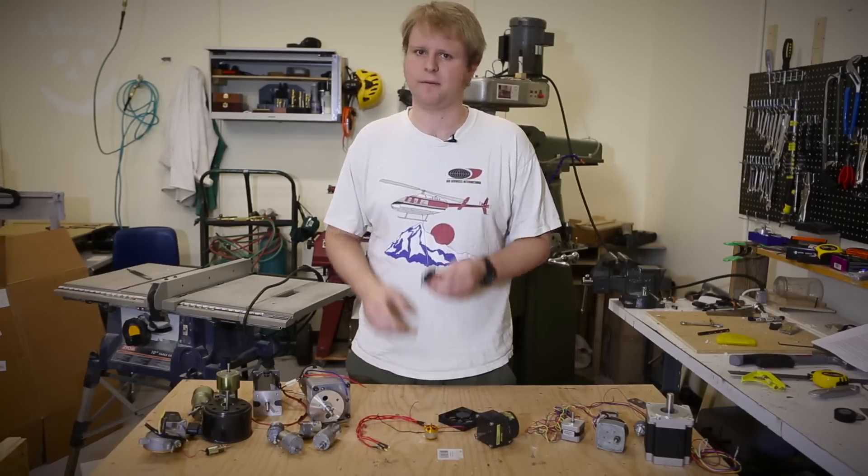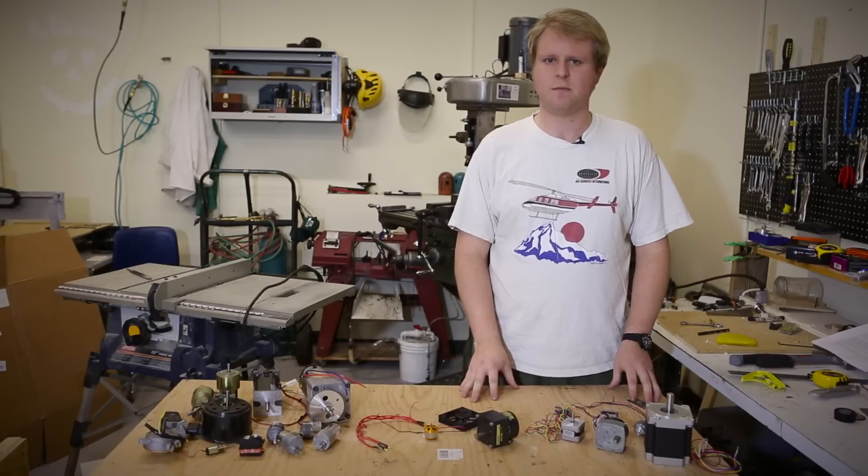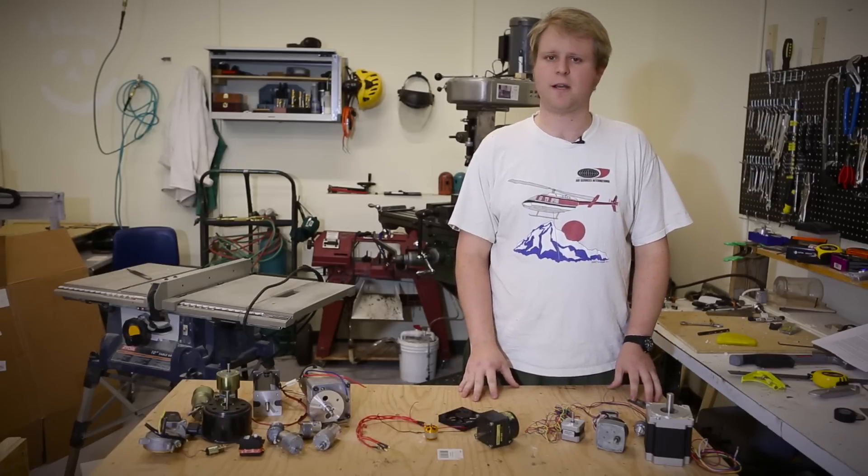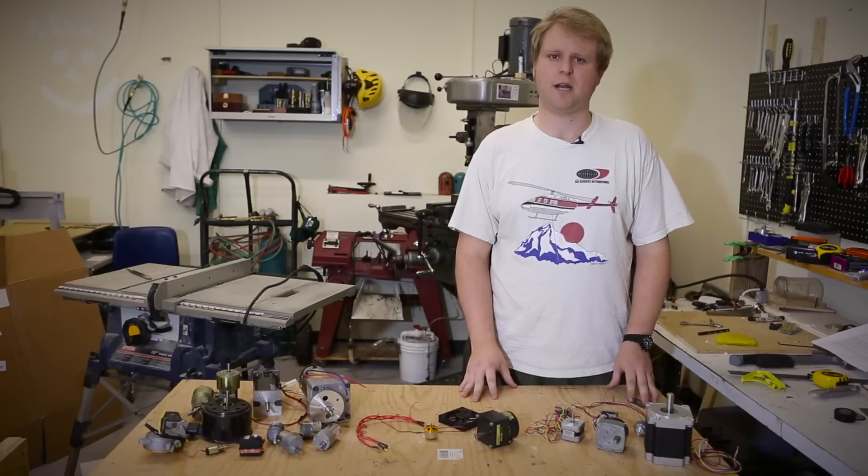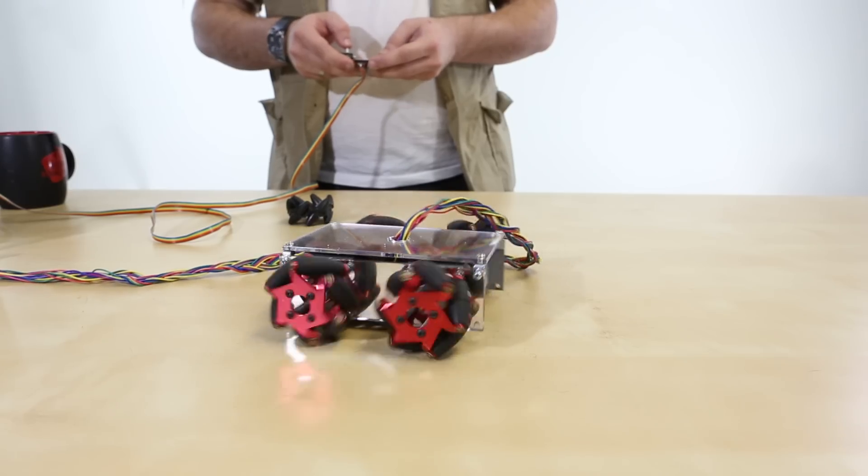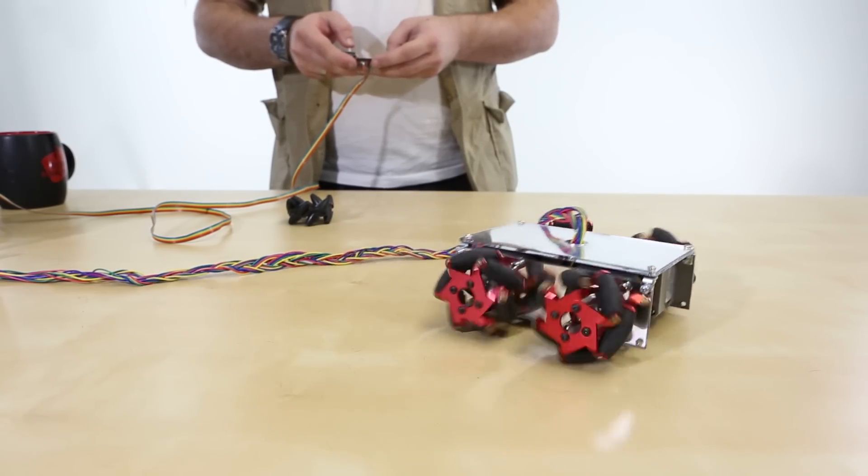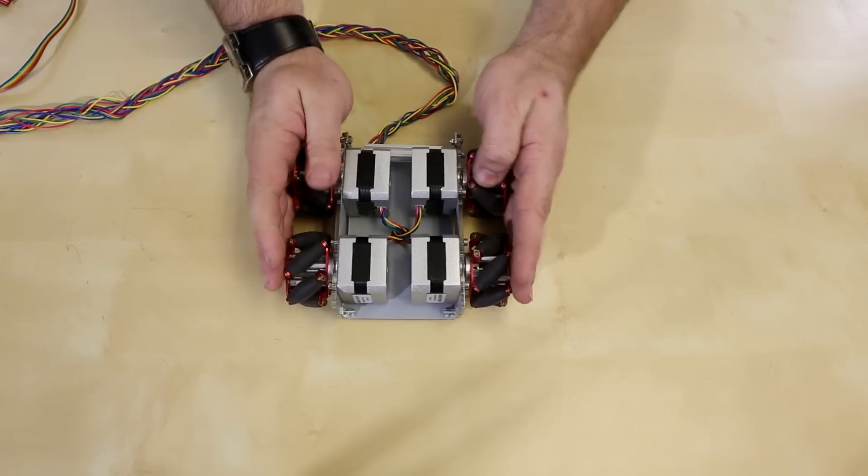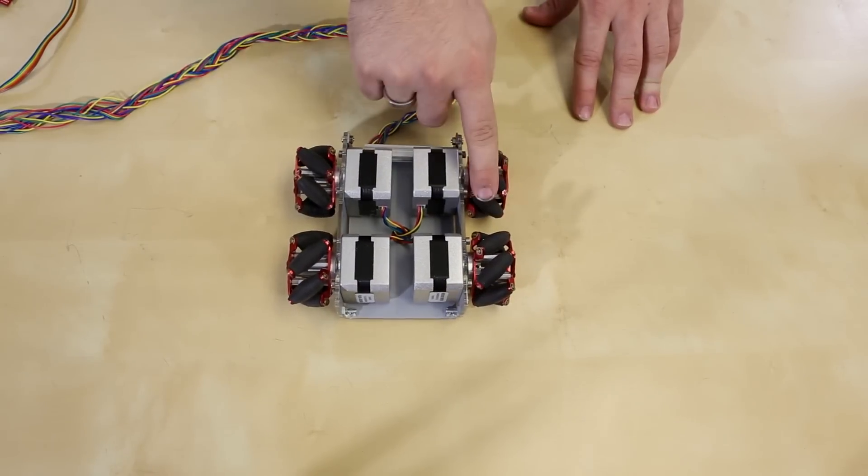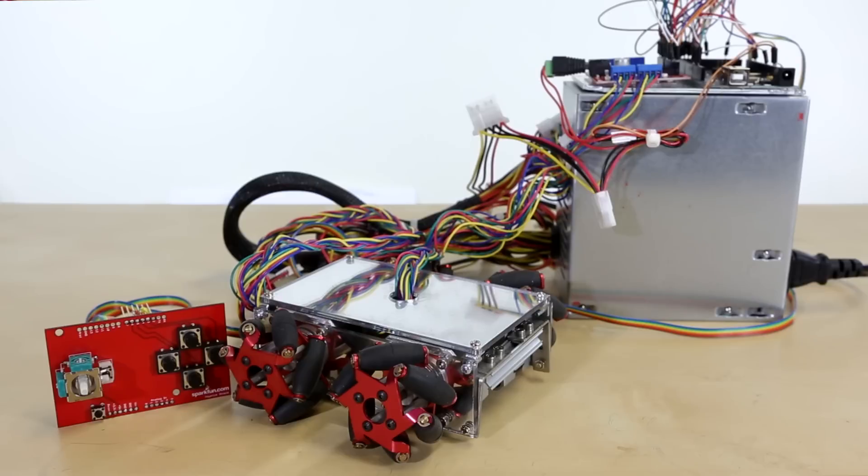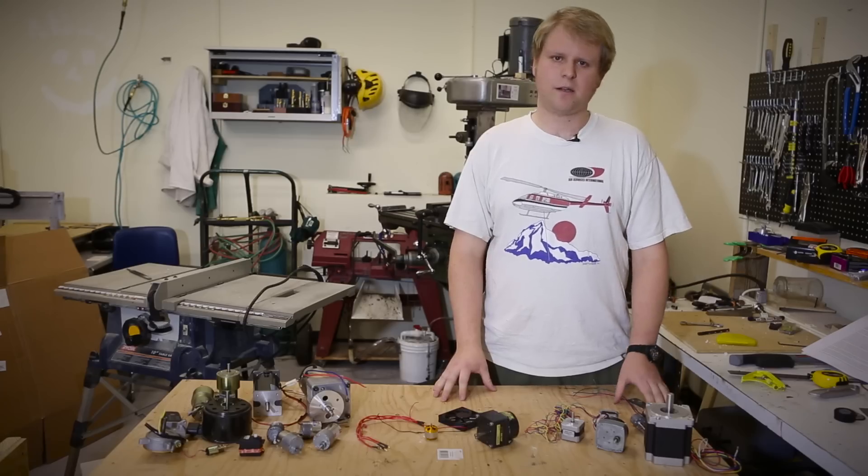Moving on to stepper motors, these are typically found in CNC machines, 3D printers, and anything else that requires high positioning accuracy. Stepper motors have exceptional holding torque at the expense of higher RPMs. Stepper motors are not quite as easy to control as compared to a DC brush motor. They require an external driver, which are inexpensive and easy to come by. Now let's take a look inside of a stepper motor.